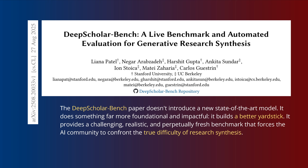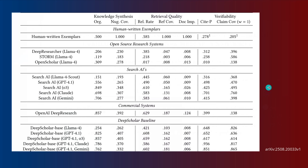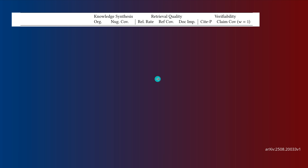It shows us the true difficulty AI systems have when they have to do research. Here's the result — but first, let me explain the metric and the benchmark methodology. They decided to go with a three-dimensional differentiation.